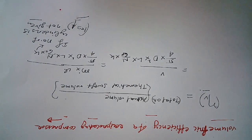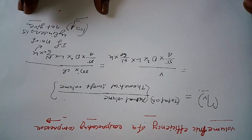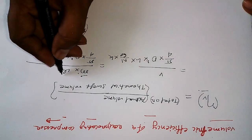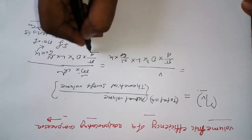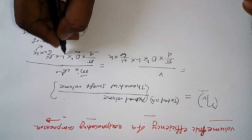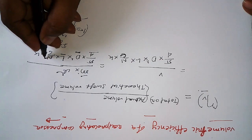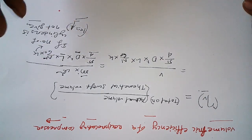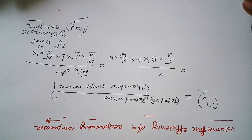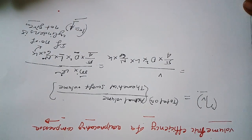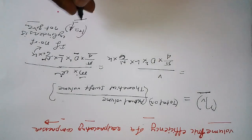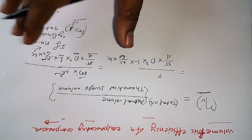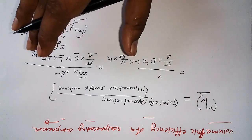Here, D is the bore diameter, L is the length of the stroke, and n is the RPM — revolutions per minute of the cylinder. This is one formula to find out the volumetric efficiency of a reciprocating compressor.